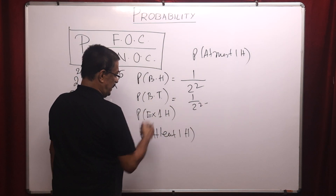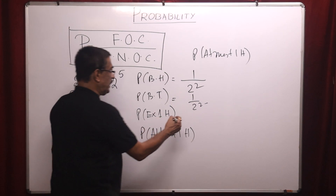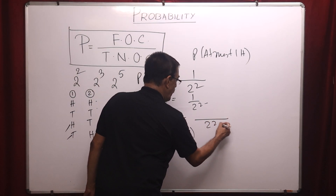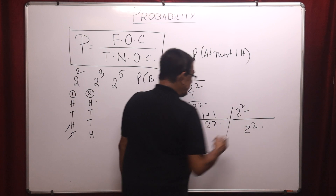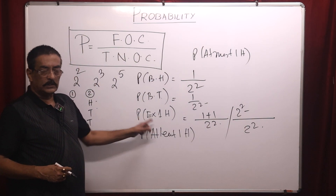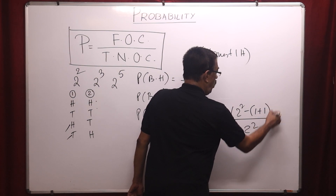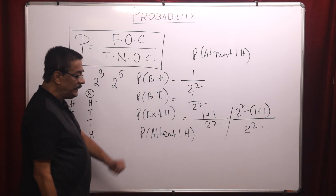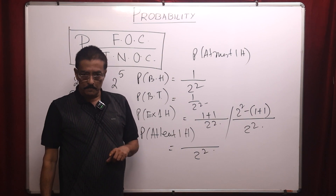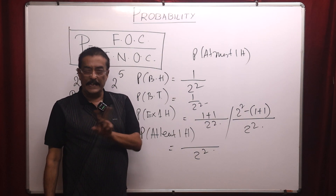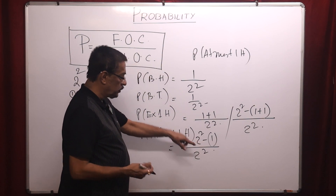For exactly one head: I can consider first head second tail, or first tail second head — that gives 1 plus 1 cases. Alternatively, use the revert method: total outcomes minus cases I cannot consider. For exactly one head, I cannot consider both head and both tail — so two to the power two minus two cases, and the balance should be considered. For at least one head: I cannot consider only both tail — so two to the power two minus one case. This revert method minimizes your solving time.